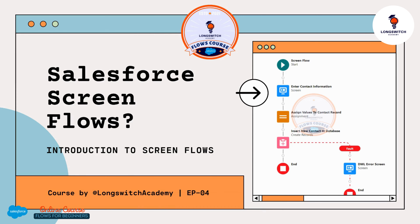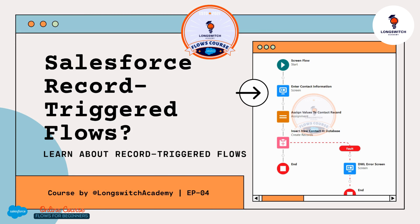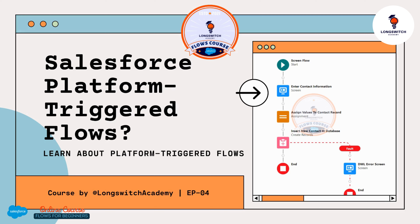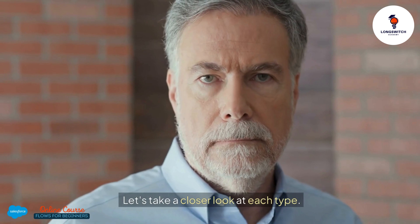The main types of flows are: Number 1 is Screen Flows — used for user interaction. Number 2 is Schedule Triggered Flows — run at specified times and intervals. Number 3 is Record Triggered Flows — triggered by changes to Salesforce records. Number 4 is Platform Event Triggered Flows — triggered by platform events. Number 5 is Auto Launched Flows — run automatically when invoked by another process. Let's take a closer look at each type.